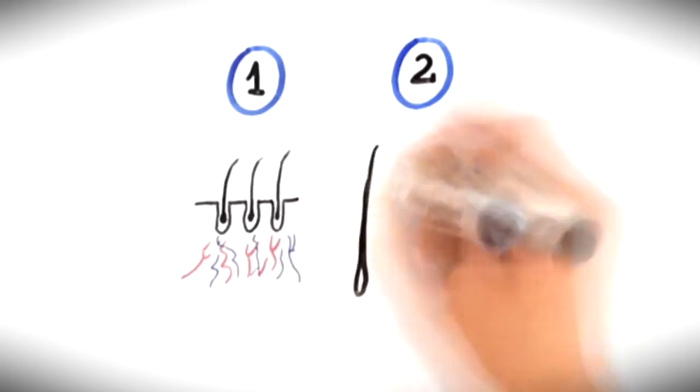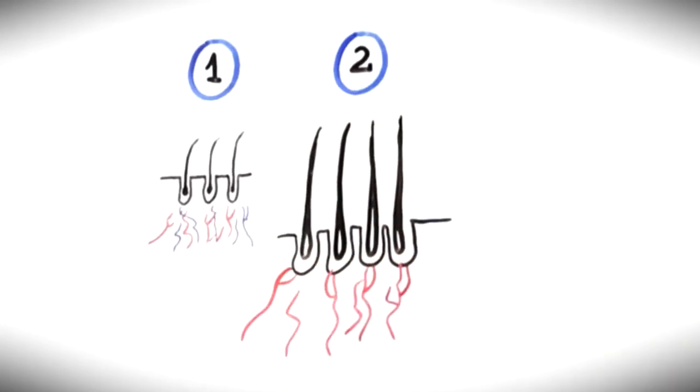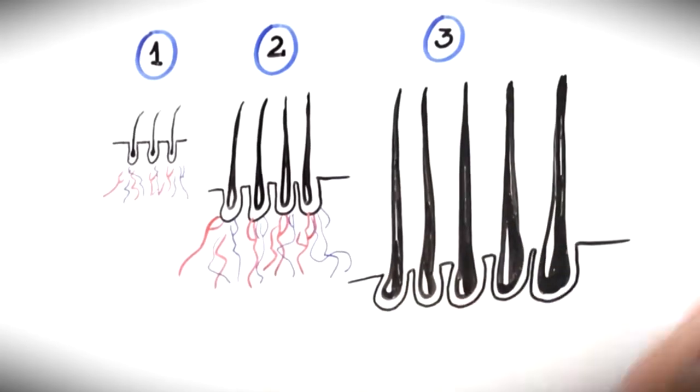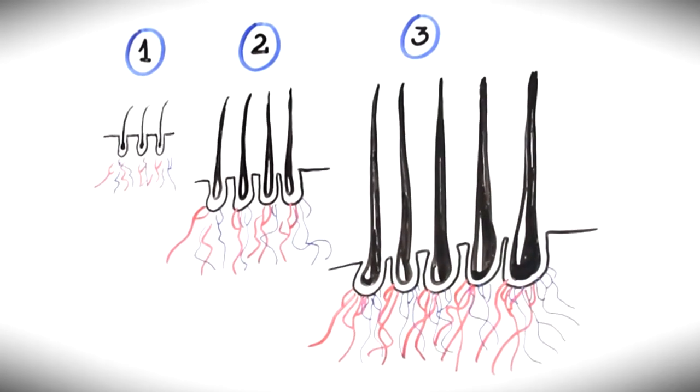In response to photostimulation, vascularization, blood supply and nutrients increase in the scalp and hair follicles. Follicles can reverse miniaturization, prevent additional hair loss, and restore healthy hair generation.